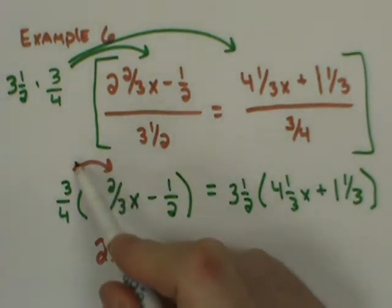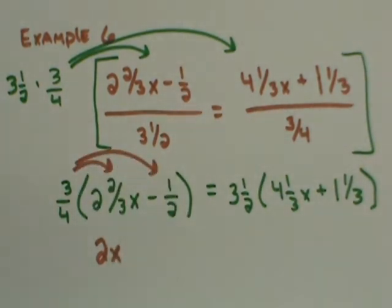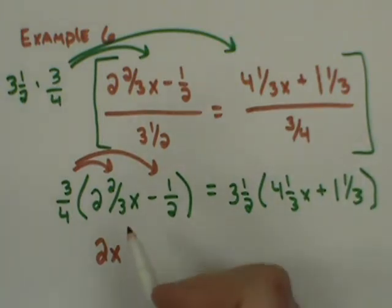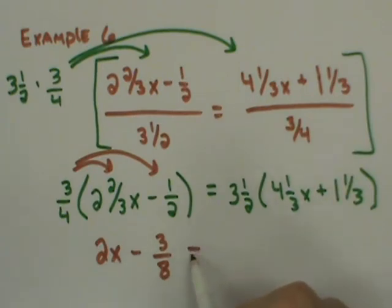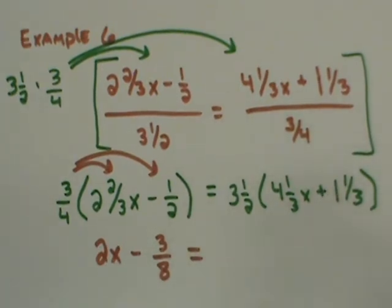And then for the second distribution, I'm going to go 3, ABC, 4 times 1, ABC, 2. And I get 3 eighths. And I just start all over. I'm going to go 3, ABC, 1, ABC, 2 times 4, ABC, 1, ABC, 3. And I get 15 and 1 sixth.